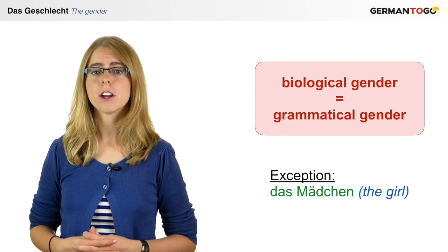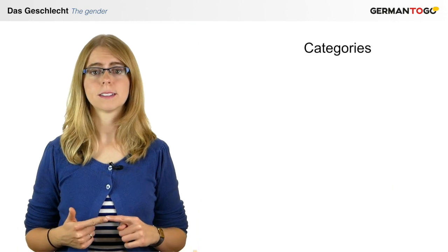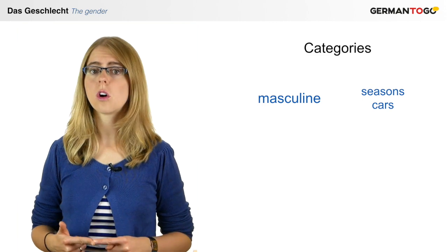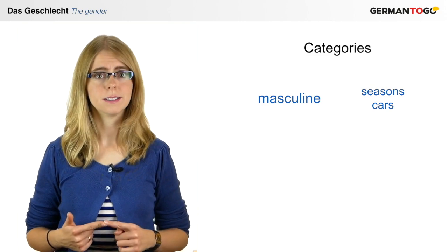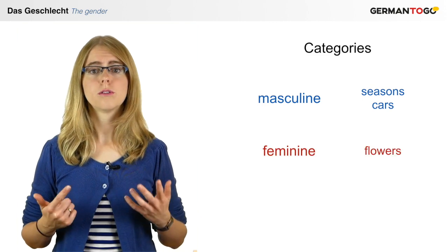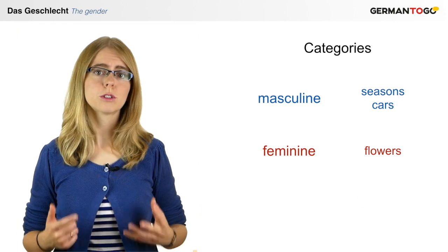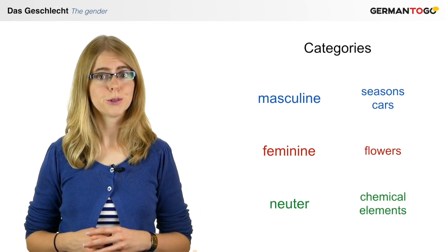Then there are categories. For example, all seasons and all car brands are masculine, all flowers are feminine, and almost all chemical elements are neuter.